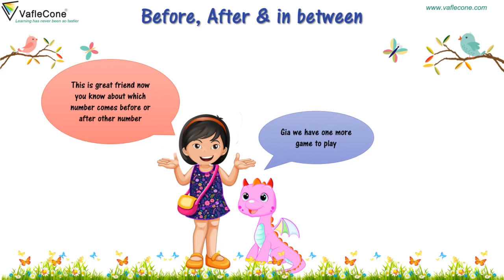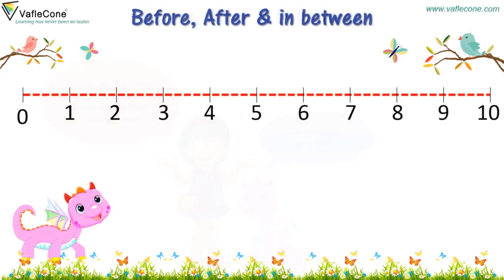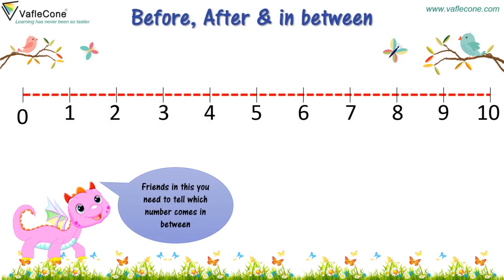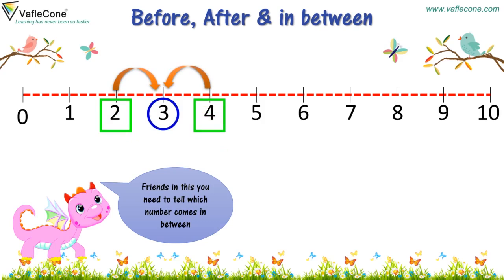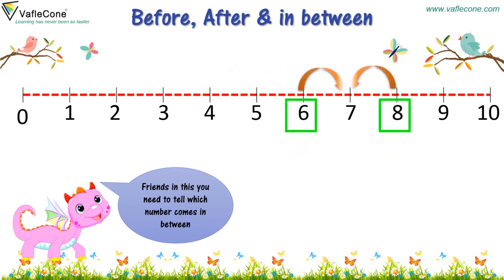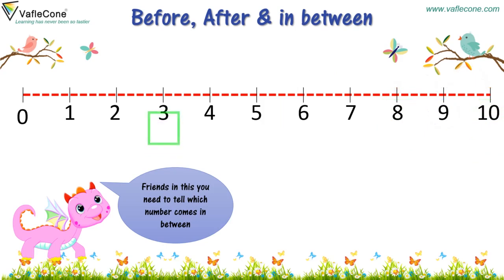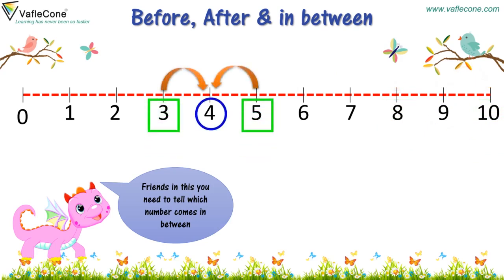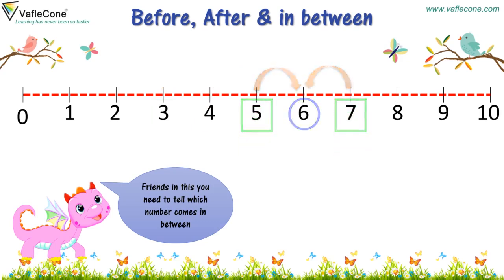Now you know about which number comes before or after another number. Jiya, we have one more game to play! Friends, in this you need to tell which number comes in between. Two and four — three. Four and six — five. Eight and ten — nine. Three and five — four. Seven and nine — eight.